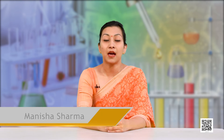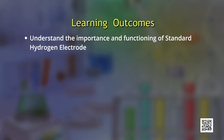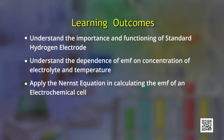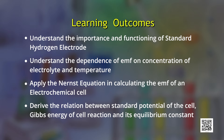Dear learners, after today's discussion, you would be able to understand the importance and functioning of standard hydrogen electrode, understand the dependence of EMF on concentration of electrolyte and temperature, apply the Nernst equation in calculating the EMF of an electrochemical cell, and derive the relation between standard electrode potential of the cell, standard Gibbs energy of cell reaction and its equilibrium constant.